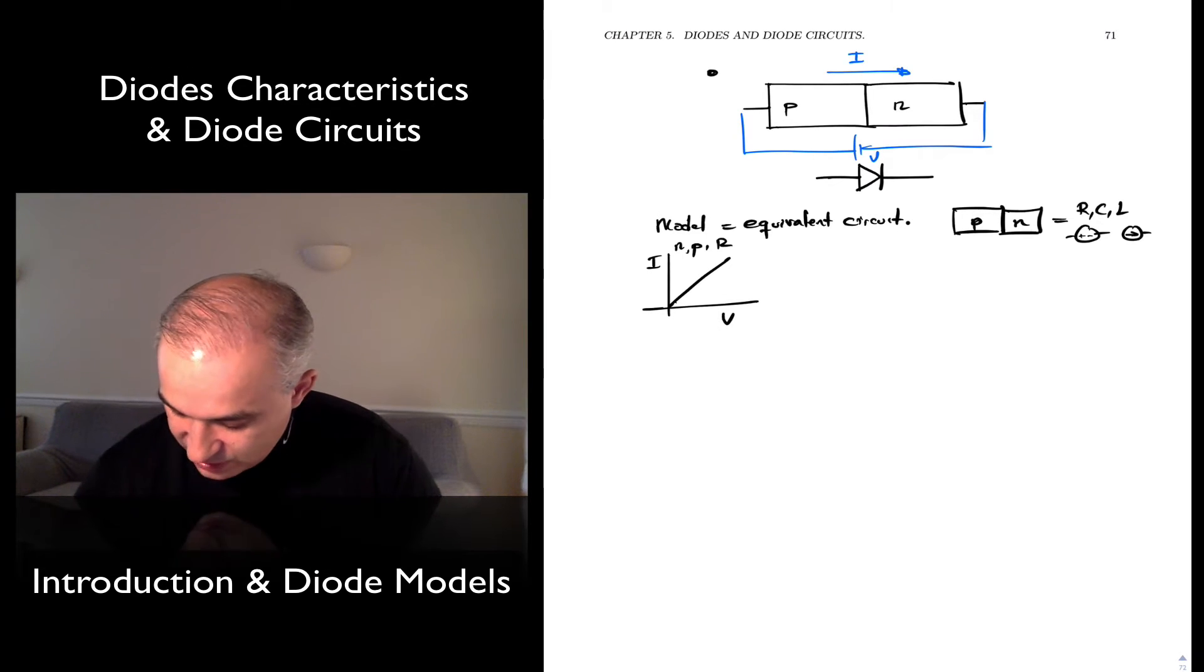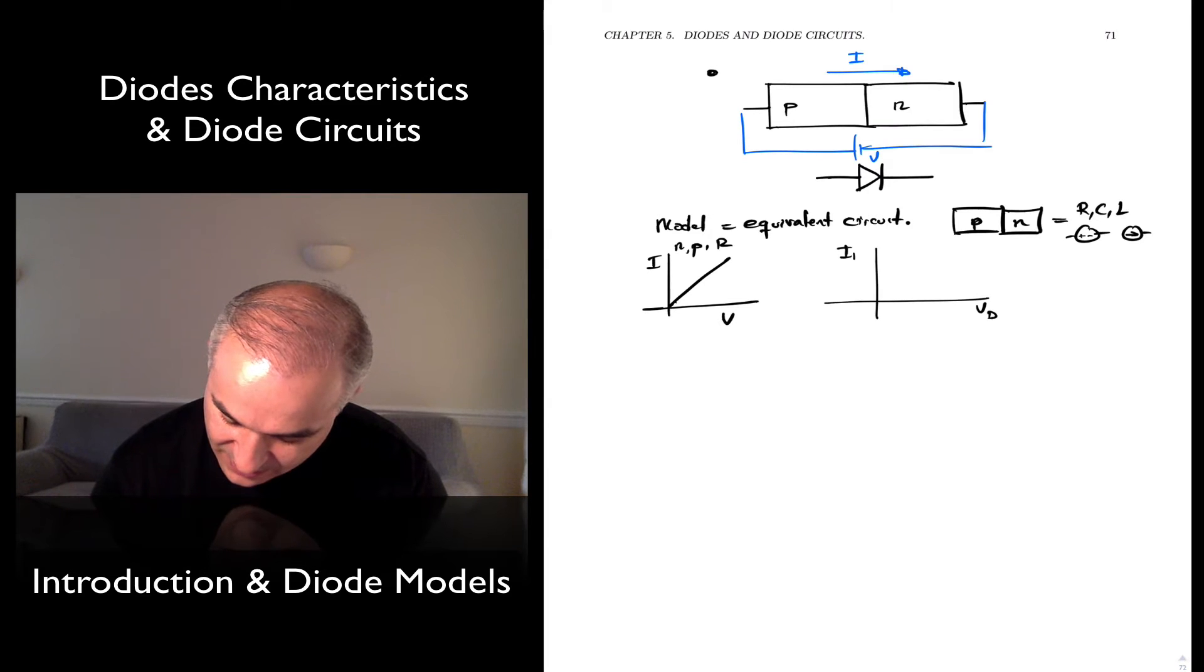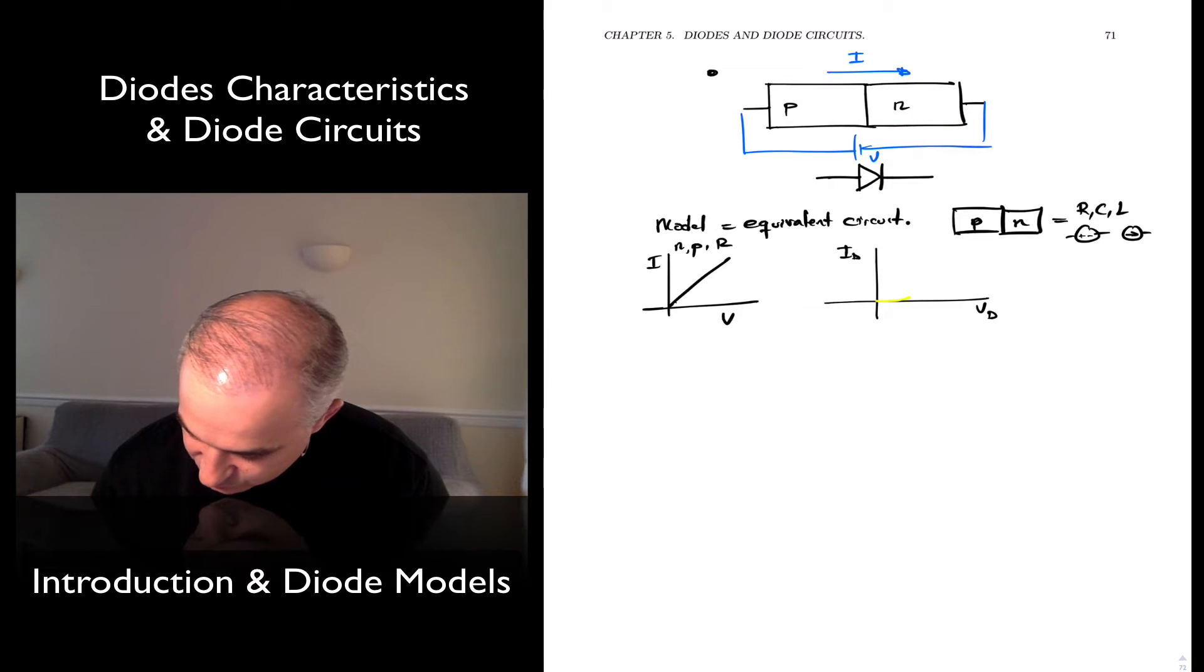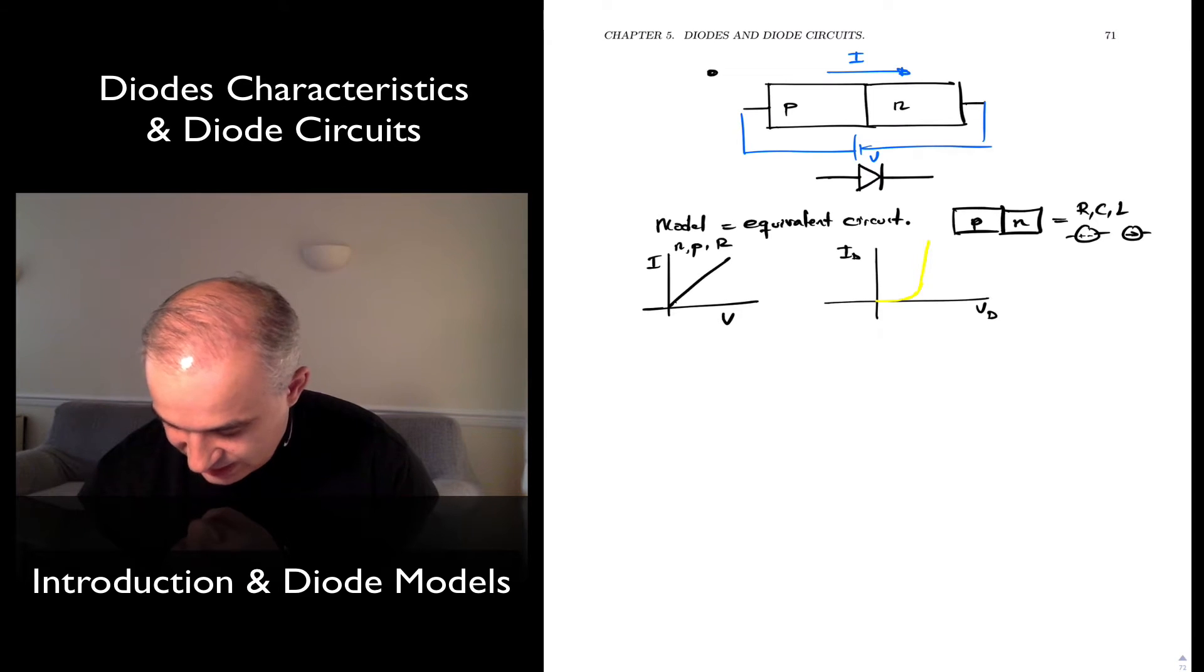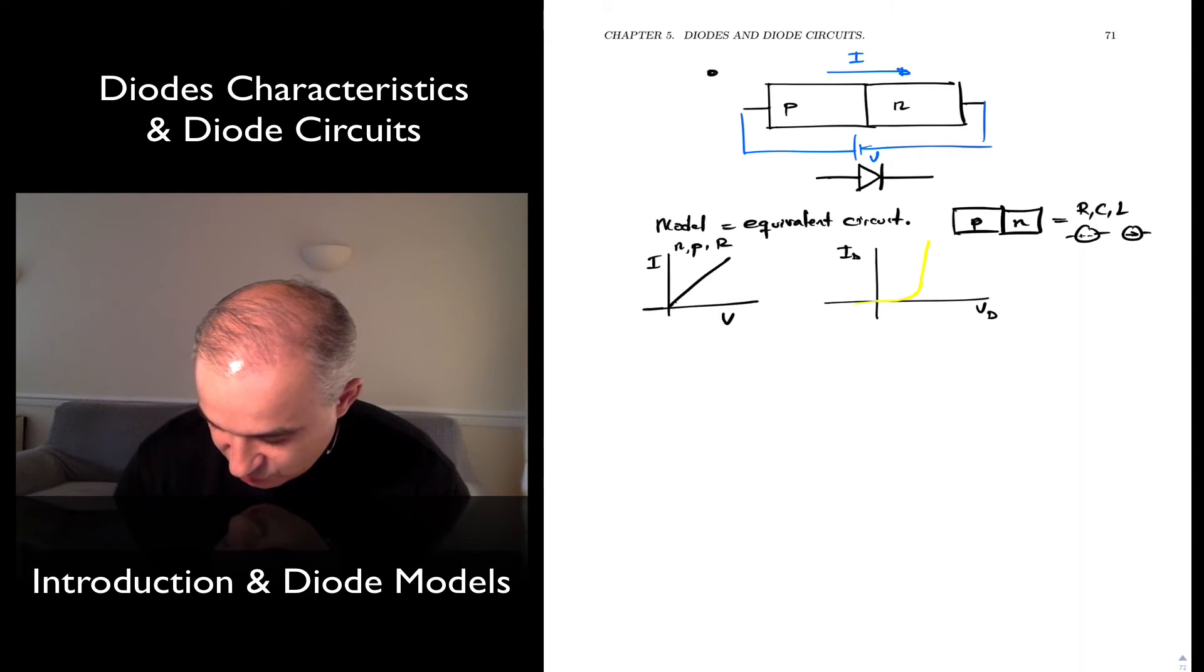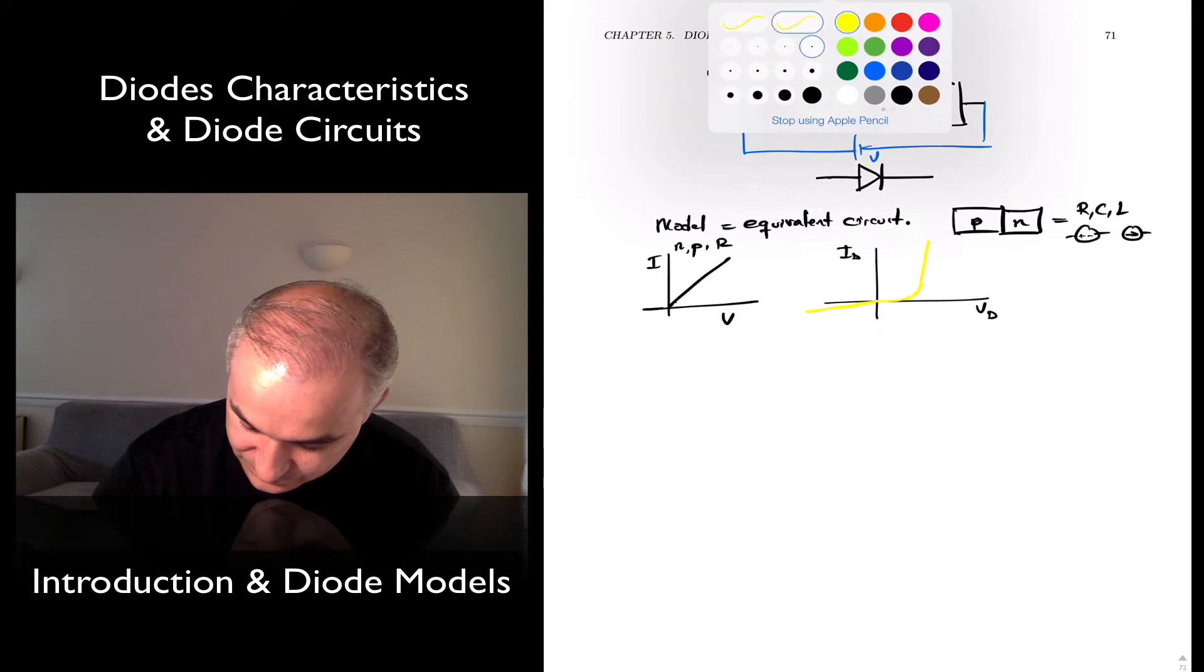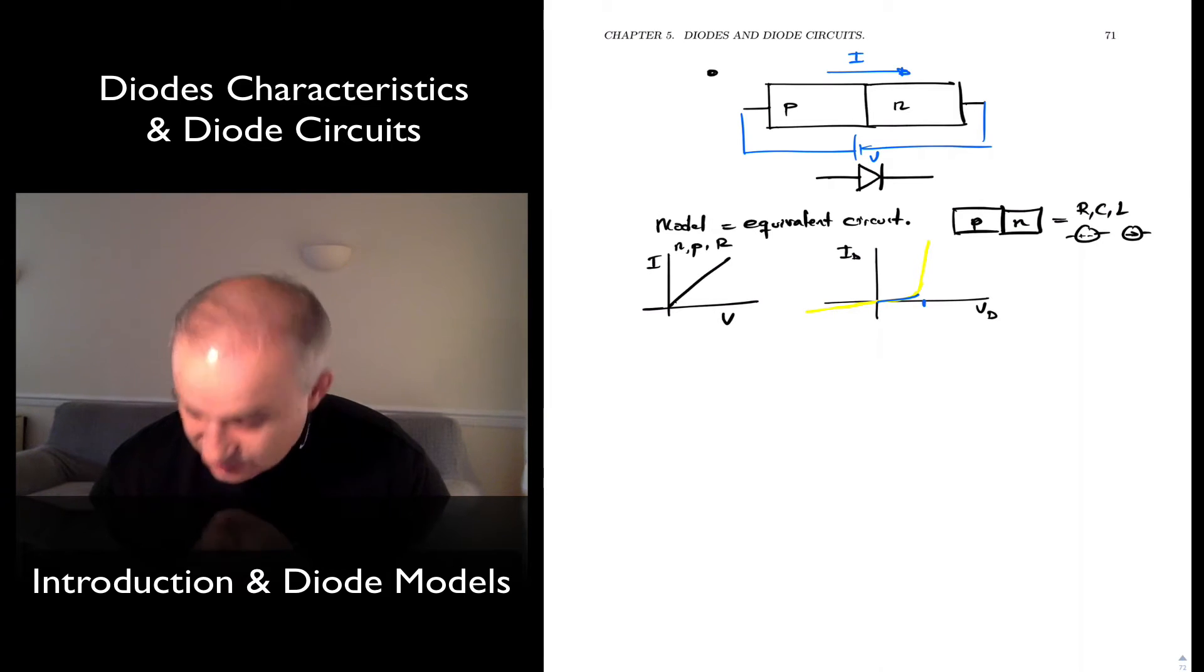So if you recall, our current-voltage characteristic for a p-n junction was something like this. We have the voltage across the diode and the current through the diode. Initially, we do not get any current, and then we get current. And if you go reverse bias, you get very little all the way to the breakdown. So no current, although we are increasing the voltage, up to some new voltage.